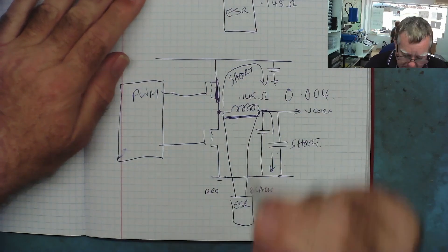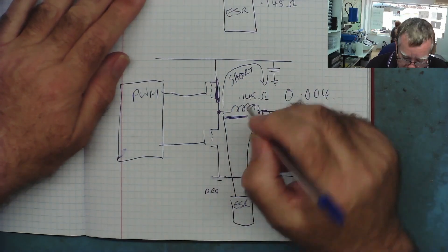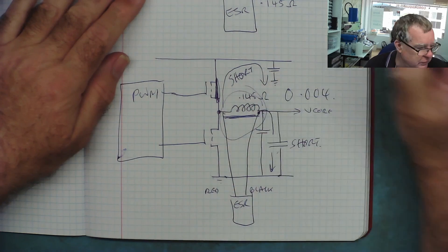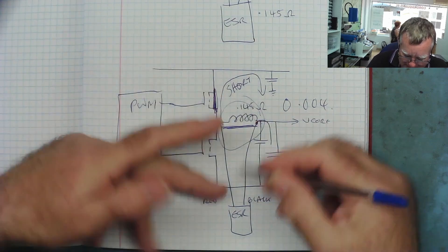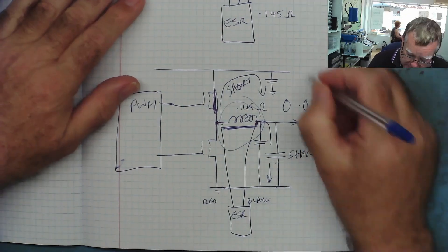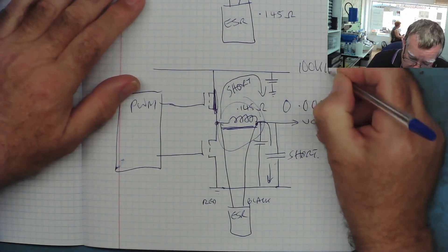That's why on the one with the shorted phase it read 0.004. Really we're just reading the ESR of the capacitors. So I hope that absolutely clarifies why the ESR meter worked, and spectacularly so. But this will only work when you're measuring across an inductor. It's the inductance that gives you the resistance at the frequency, 100 kilohertz.